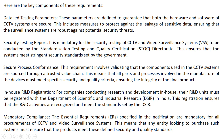Here are the key components of these requirements. Basically there are five key components: detailed testing parameters, security testing report, secure process confirmation, in-house R&D registration, and mandatory compliance. Starting with the first — detailed testing parameters: these parameters are defined to guarantee that both the hardware and software of the CCTV system are secure, including measures to protect against the leakage of sensitive data, ensuring that surveillance systems are robust against potential security threats.